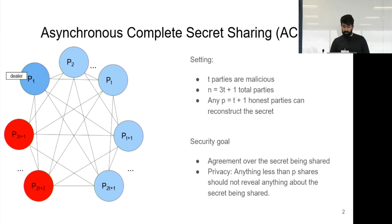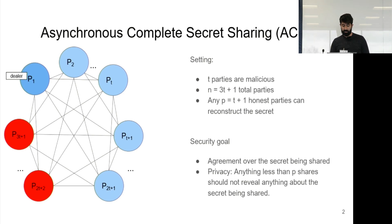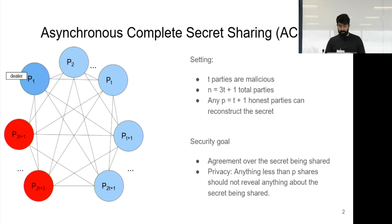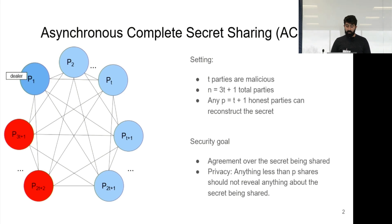This means every party needs to have a share, and this must hold even in the presence of T malicious parties that can lie. We focus on the N = 3T+1 setting, so around a third of the parties could be malicious. The protocol is in the asynchronous setting: the attacker can delay messages arbitrarily between any two honest parties, there are no reliable failure detectors, and an honest party cannot differentiate between a slow party and a malicious party.